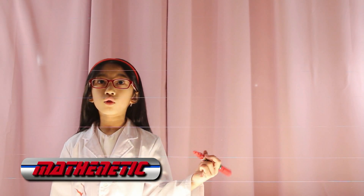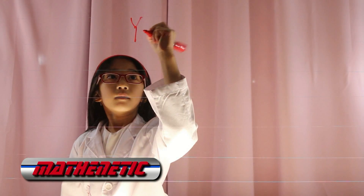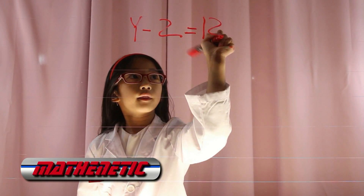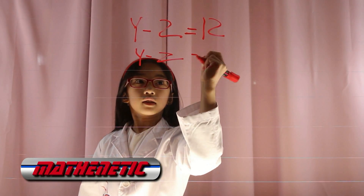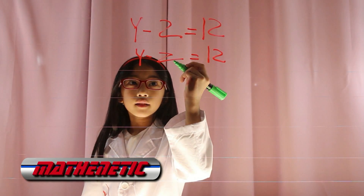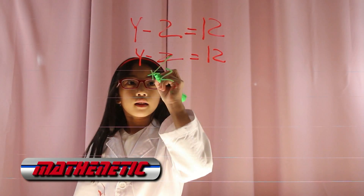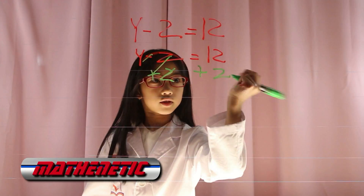Let's review algebra addition on both sides of the equation. Say you have the equation y minus 2 equals 12. Copy that down again: y minus 2 equals 12. Since this is negative 2, I have to add 2 to cancel out the negative 2. That cancels. You also add 2 on the other side.